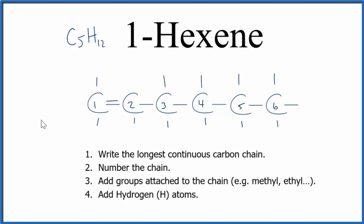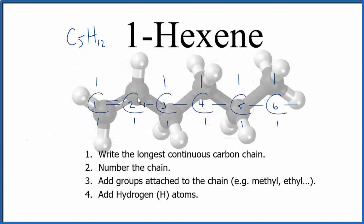If you looked at a model, a molecular model for one hexene, that would look like this. And you can see our double bond here on the first carbon. Note that the hydrogens, those are the white.